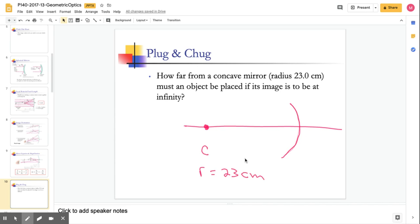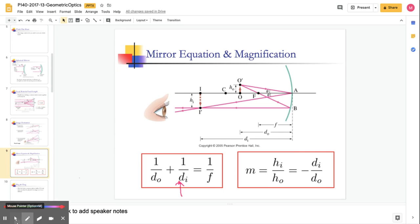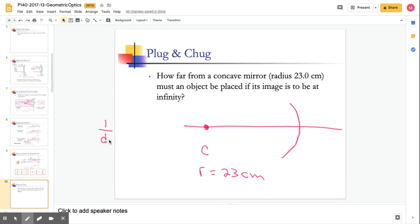And we have an object placed. Where must an object be placed if its image is to be at infinity? So, we could look at the equations. Remember these equations right here. That first equation.